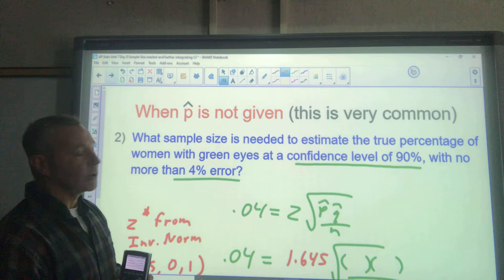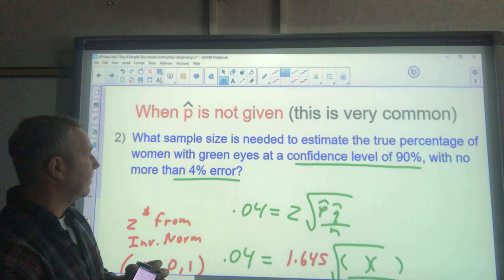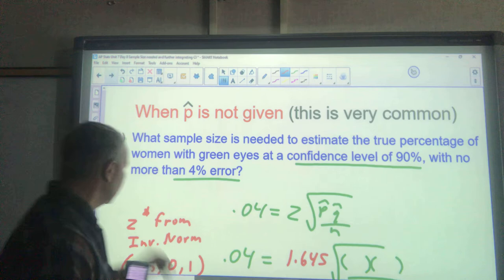Second scenario—p hat's not given to you, very common on the AP exam. What sample size is needed to estimate the true percentage of women with green eyes at a confidence level of 90% with no more than 4% margin of error? Well, you can see I've set this up: 4% equals my margin of error.